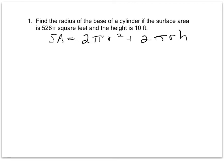Let's look at what information is given to us. We're asked to find the radius, so I'm going to circle the r's because that's what we're going to solve for. We're given that the total surface area is 528π, so we're going to plug that in for the total surface area. And we're also given that the height is 10.